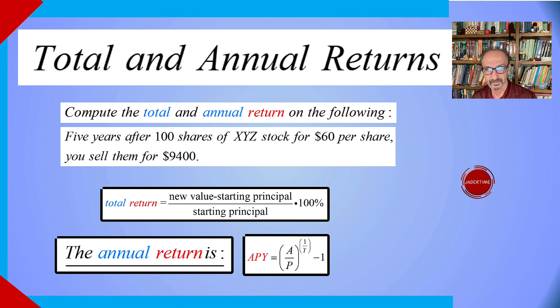The return after five years is $9,400. There are two things in this problem: the total and the annual return. To find the total return after five years, we subtract the new value, which is $9,400, minus the starting principal, which is $6,000. When you divide that by $6,000, we get a decimal, so we need to multiply that by 100 percent to change it to percent.